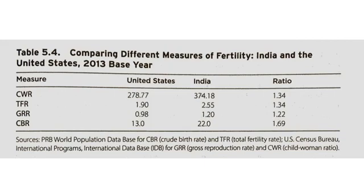Here's a simple comparison of the United States and India to show how some of these different measures look on the face of things. First we have the child-woman ratio: in the United States that's 278.7, whereas in India it's 374.18, so clearly there are more children relative to women in India. The total fertility rate: India also comes out ahead, 1.9 versus 2.55. The gross reproductive rate for the United States is 0.98, which is right about replacement level, whereas India is over that at 1.2. Then the crude birth rate: India comes in at almost twice that of the United States, 22 versus 13.